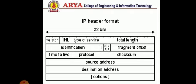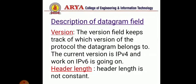In packet switching, data is always transmitted in packets, and these packets consist of a header. The header contains many fields through which we understand information such as size, flags, and so on. First, we discuss the version field. The version field keeps track of which version of the protocol the datagram belongs to — which version we are using. Right now we are using IPv4, and work on IPv6 is ongoing.